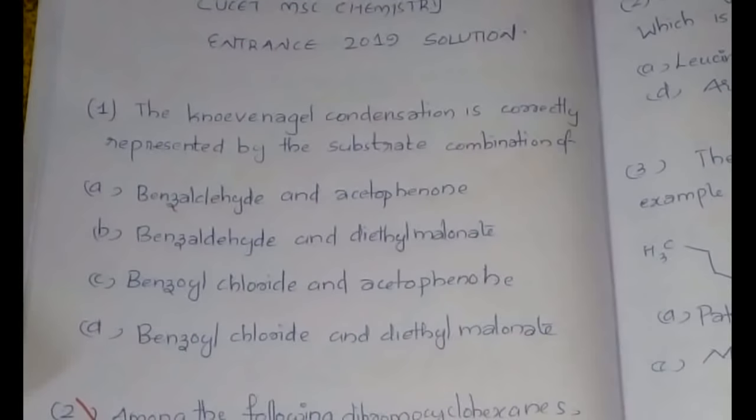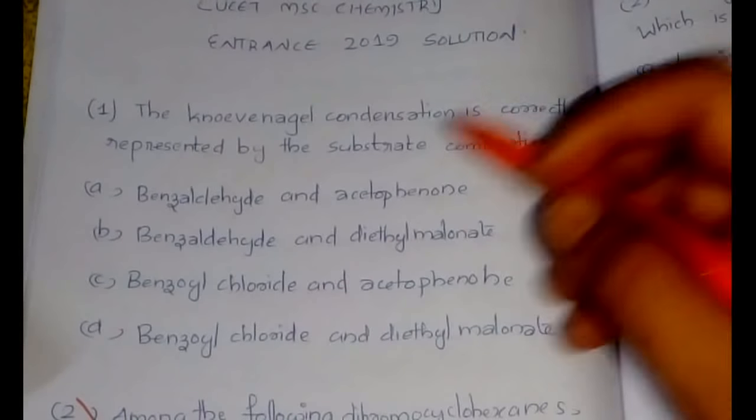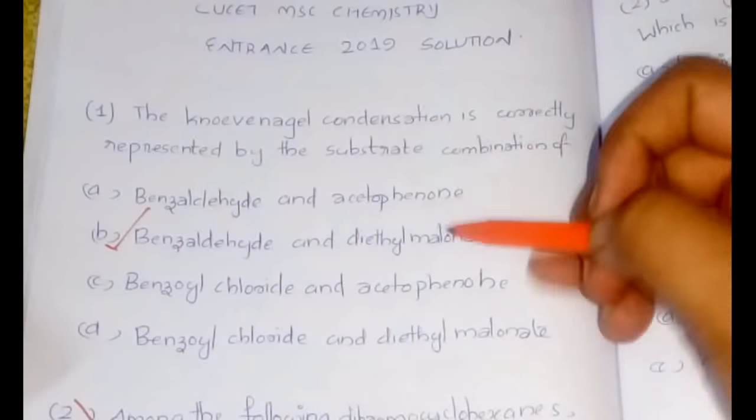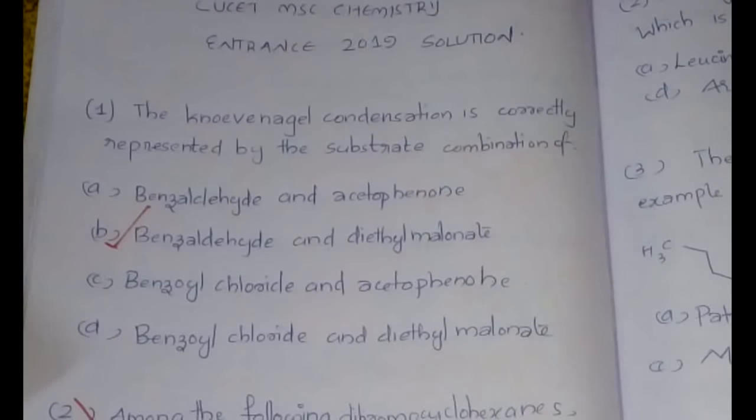Let's begin. The first question is the Knoevenagel condensation correctly represented by the substrate combination. You all know that you need an active hydrogen as well as a carbonyl group, so option B would be the probable answer because diethyl malonate is having an active hydrogen group and the carbonyl compound will be provided by the benzaldehyde.